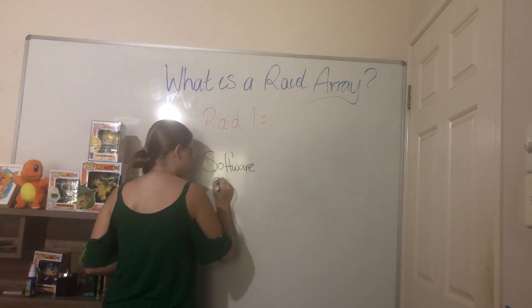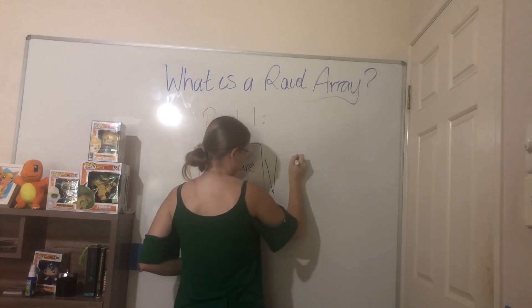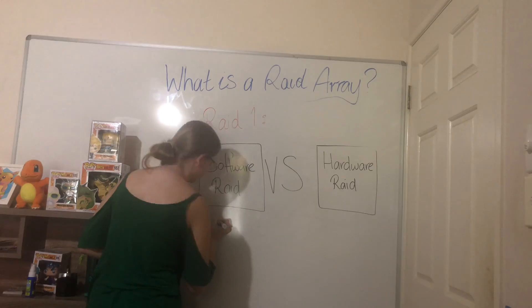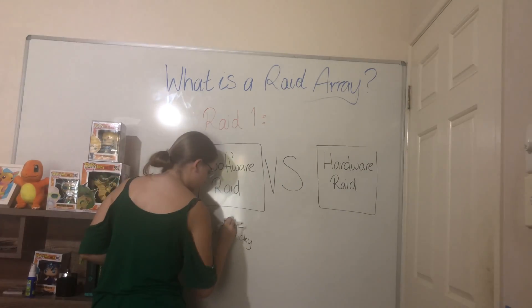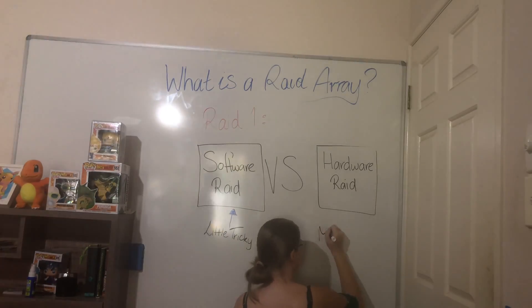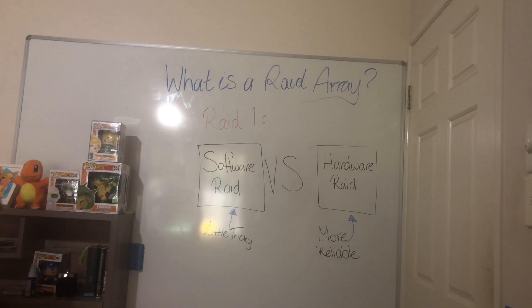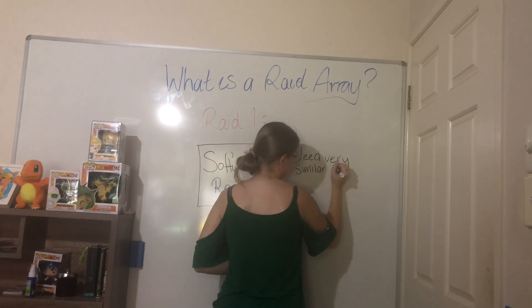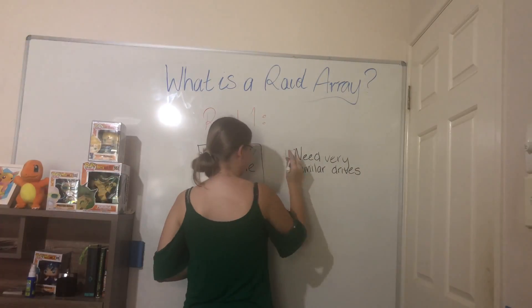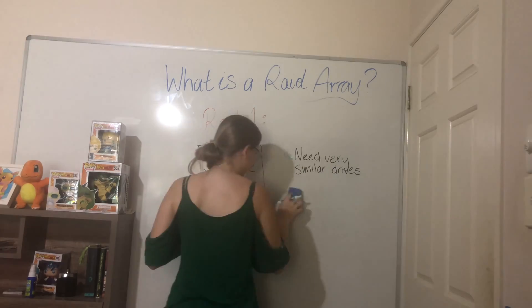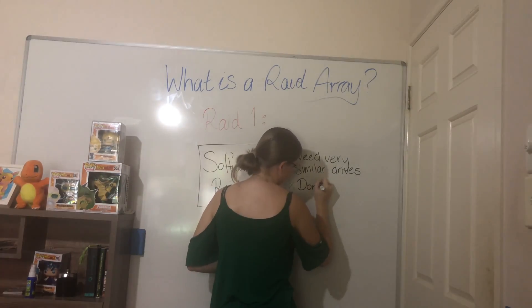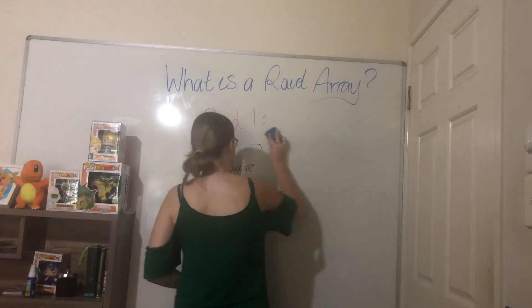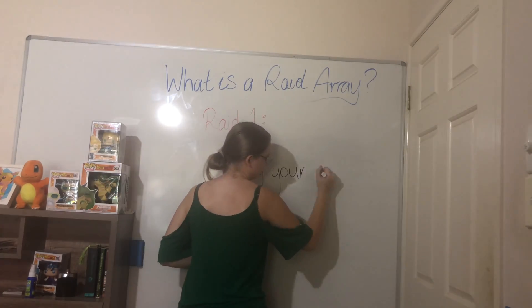The RAID array I have is software RAID as opposed to hardware RAID. Basically, as the name implies, either software or hardware dictates how your RAID is built and when files are transferred. Software RAIDs are more or less the trickier of the two - with a software RAID you need to make sure you're using the same or very similar hard drives, otherwise it could cause issues. It's also not recommended to take drives out regularly or swap SATA cables around, as doing this can degrade or completely fail your array and lose all your data.